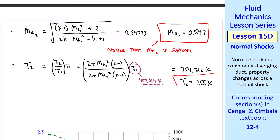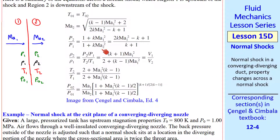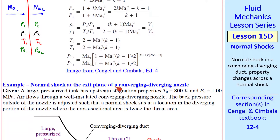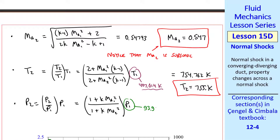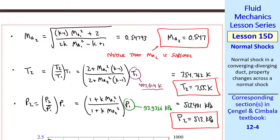To get temperature T2, I use the T2 over T1 equation: T2 equals (T2/T1) times T1. Plugging in Ma1, Ma2, K, and the T1 calculated previously, I get T2 as 755 K. Similarly, P2 equals (P2/P1) times P1. Using P1 of 93.9326 kPa, I report pressure P2 as 513 kPa.